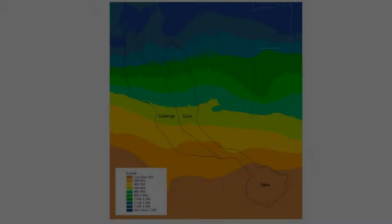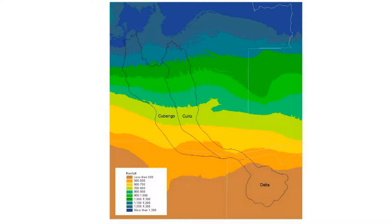A lot of the discussion one hears essentially becomes untenable because it flouts some simple geography. I want to run you through some of the simple geographical realities — not fake news, but proper news — about what the basin looks like. Firstly, as I'm sure you all know, rainfall is much higher in the north than in the south in the delta, by about two-fold. Altitudes are much higher in the north than in the south.